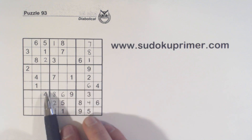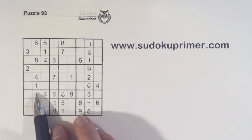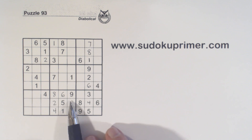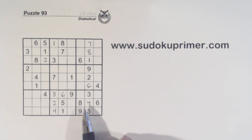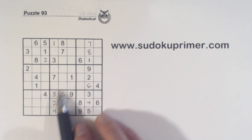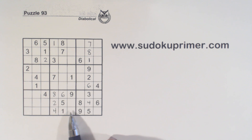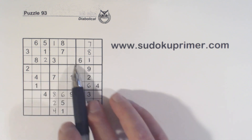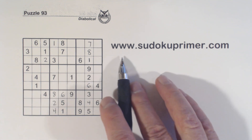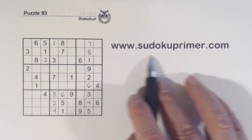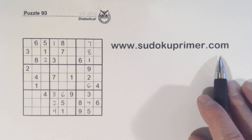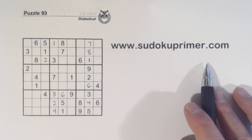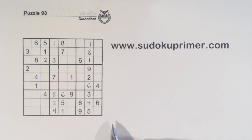All these techniques I'm talking about — ghost numbers, right angle pattern, twins, and others — are all on the website at SudokuPrimer.com. If you want to learn more about these techniques, go out there. There's a technique section and a pattern section that you can look at, and lots of other Sudoku information as well.